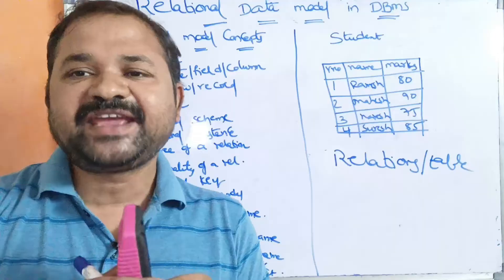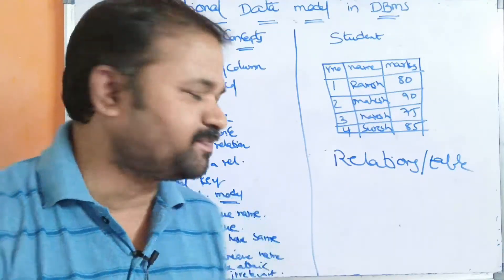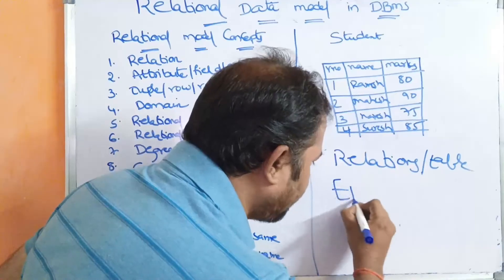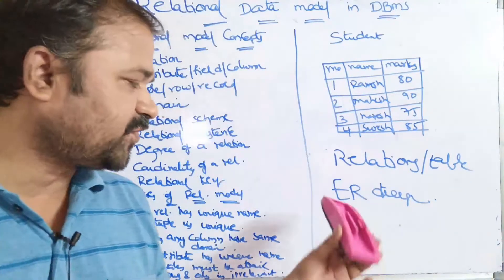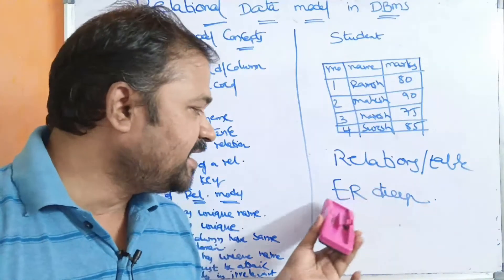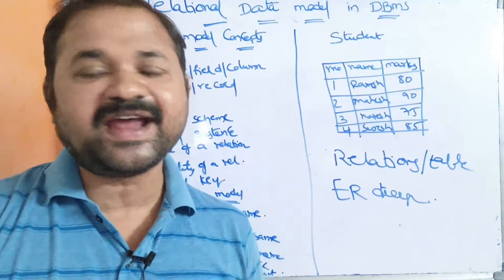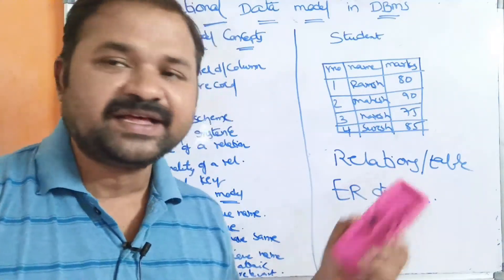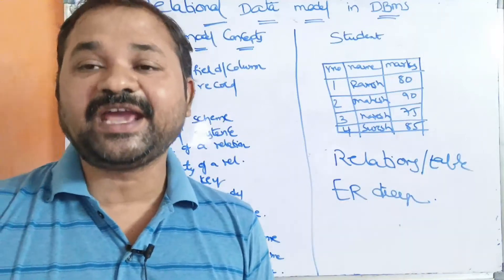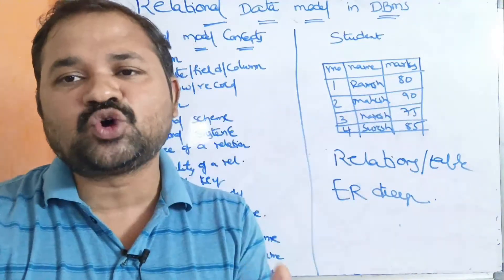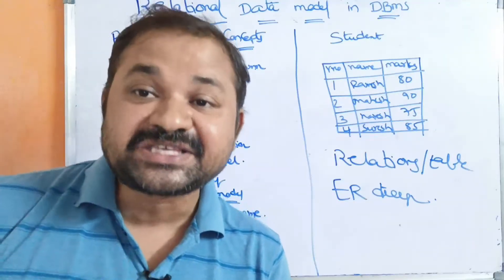We know that we can design the database by using the ER diagram — entity relationship diagram. A database design will be done using the ER diagram, and after that, the ER diagram will be converted to relations, that is, to tables. And then those relations are implemented using SQL.